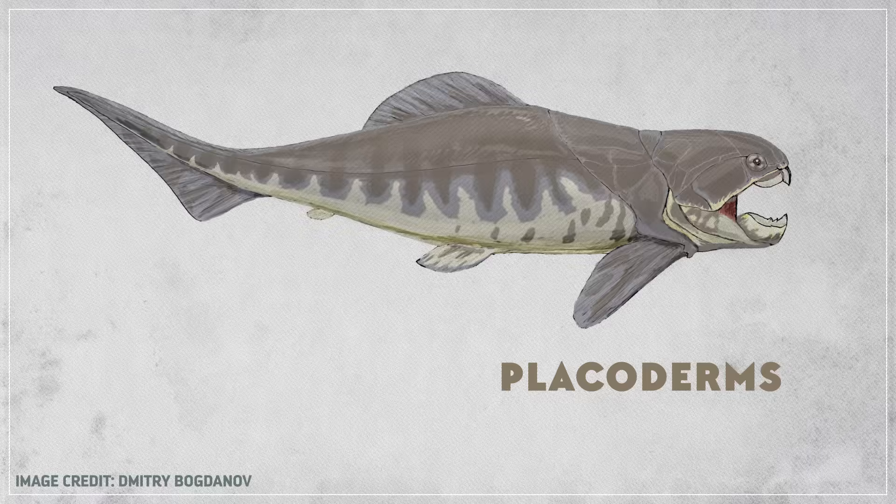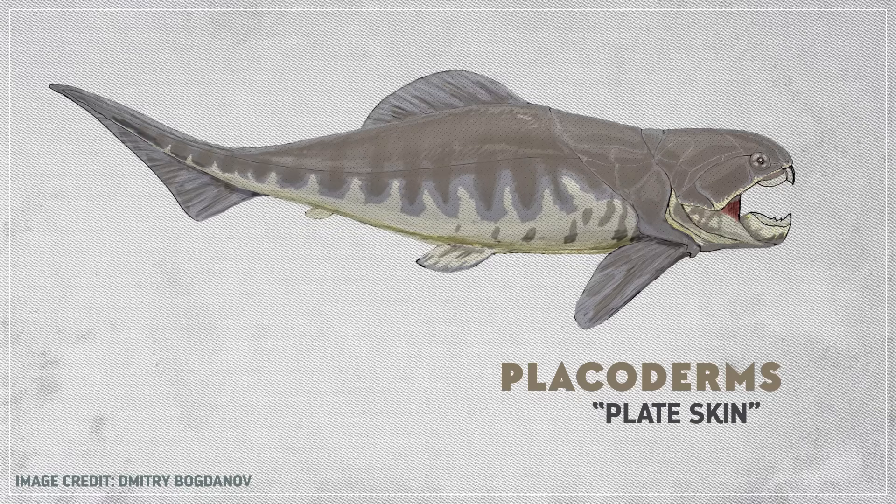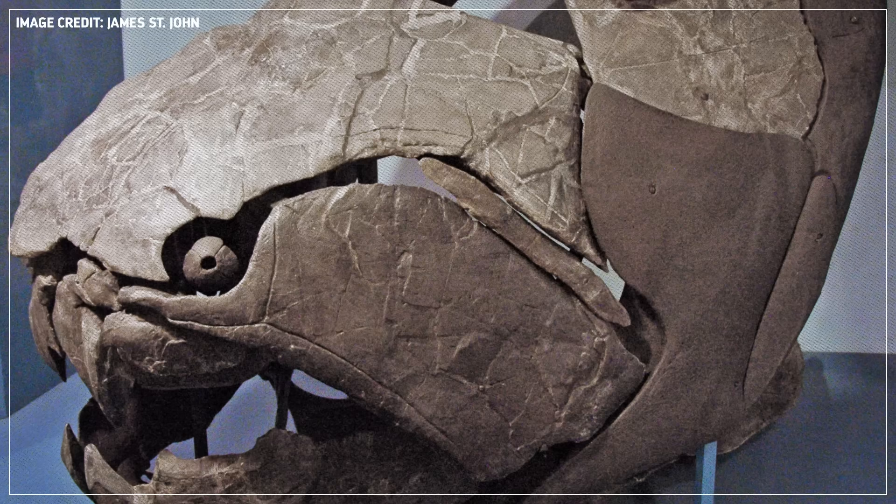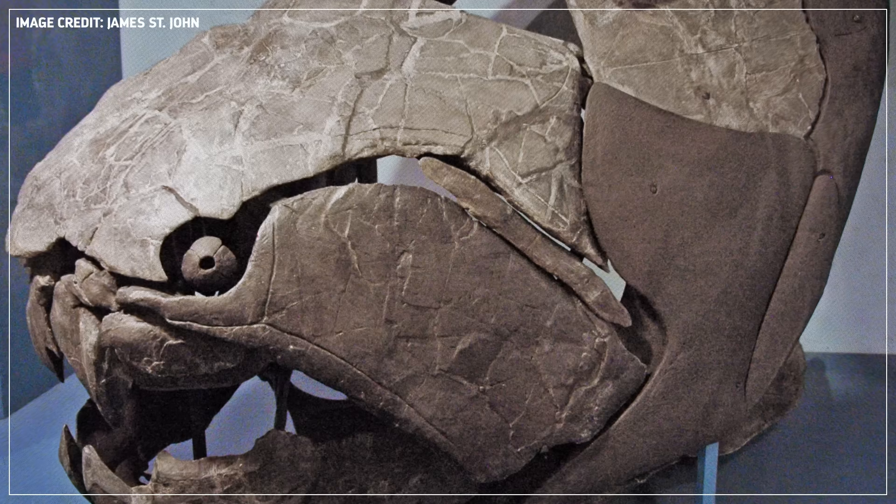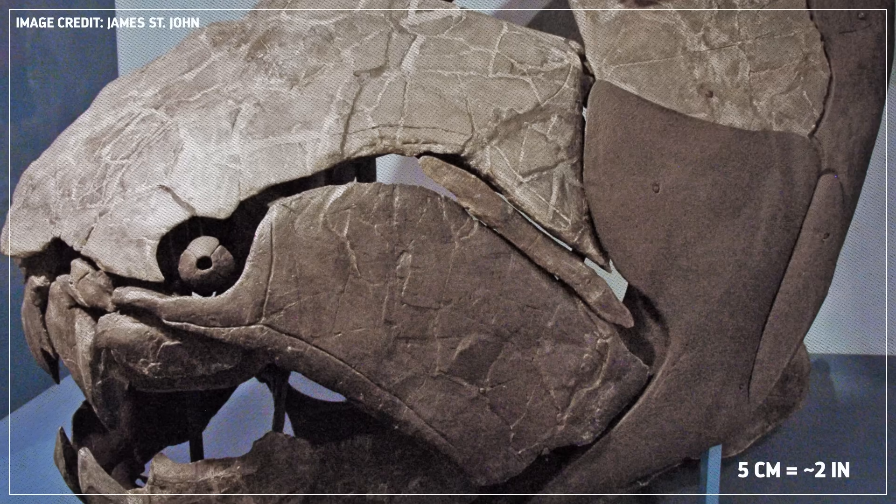And this brings us to probably the best-known armored fish, the placoderms. Placoderm means plate skin, and plated they indeed were, with big chunks of bone, dentine, and enameloid armor on their head and bodies. In some placoderms, the covering got up to five centimeters thick.